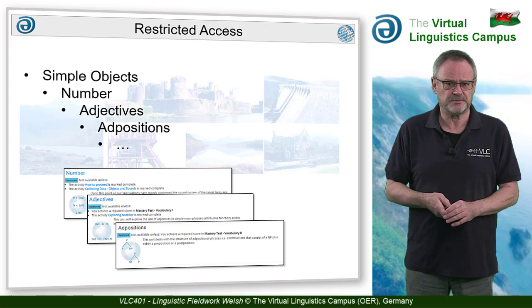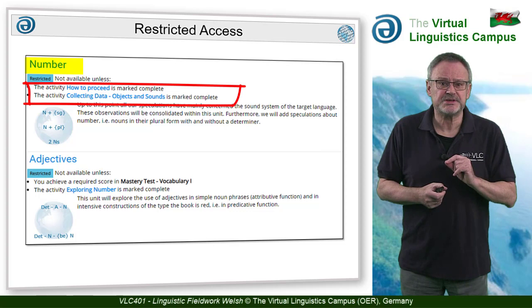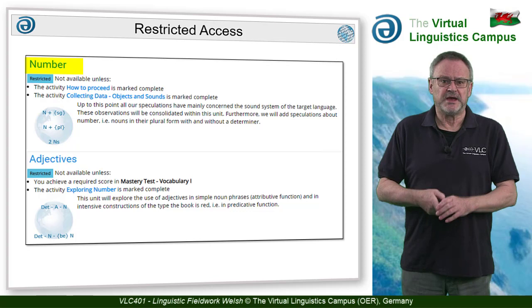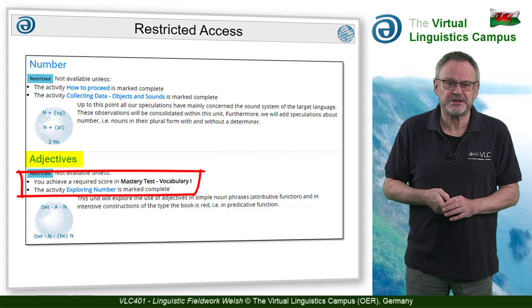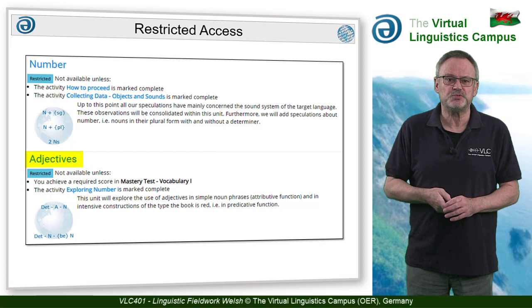For example, the unit on number can only be accessed if two previous activities are completed, and the subsequent unit on adjectives is only available if vocabulary test one is passed successfully and the exploration activity of the previous unit was marked as successful.